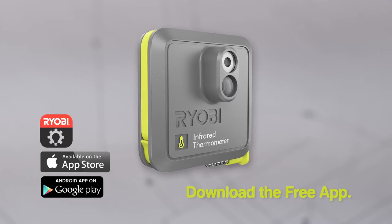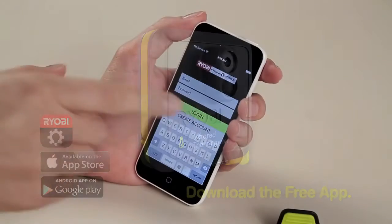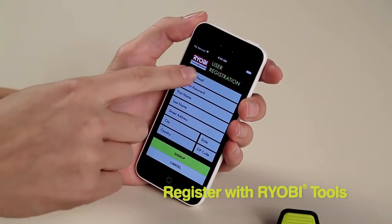From your smartphone, download the free Ryobi PhoneWorks app from the App Store or Google Play. Select the Ryobi PhoneWorks app on your smartphone's home screen and register with Ryobi Tools.